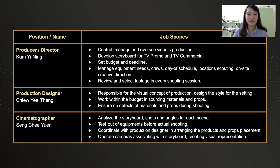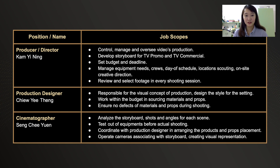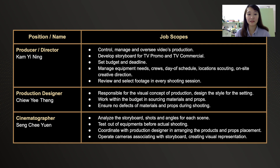As for William, the cinematographer, he needs to analyze the storyboard shots and angles for each scene that I have produced. He has to test out the equipment and shots before the actual shoot, primarily during the production stage. He will be coordinating with Etting, the production designer, in arranging the products and prop placement. Overall, he's in charge of operating cameras, associating with the storyboard, and creating visual representations.